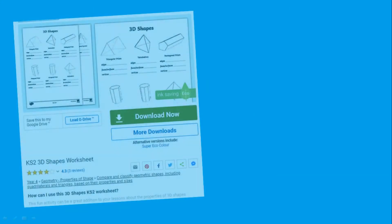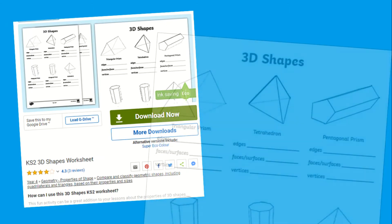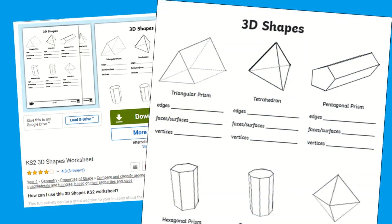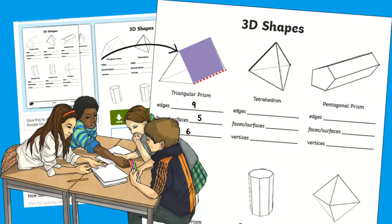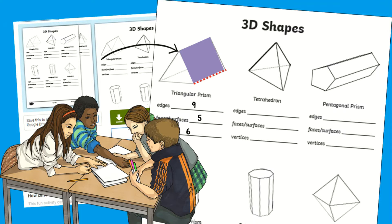If you are teaching the properties of 3D shapes, this sheet is a great addition to support the teaching and learning. It breaks down common shapes and includes images so children can identify their properties — how many edges, faces and vertices in these common 3D shapes. To accompany this activity you may wish to leave some 3D shapes in the middle of tables for your children to investigate them physically.